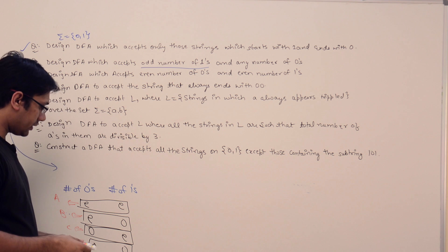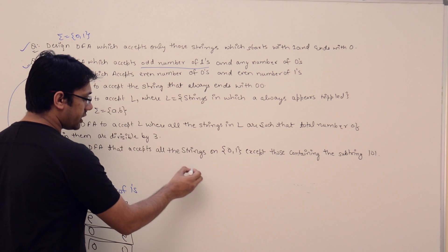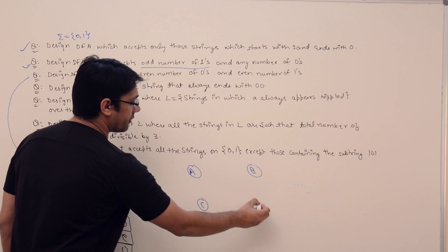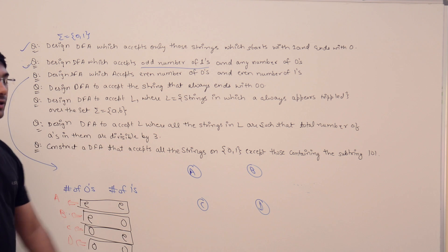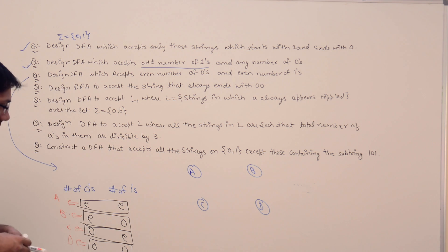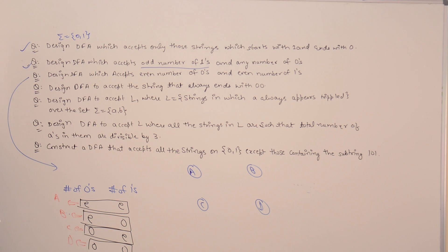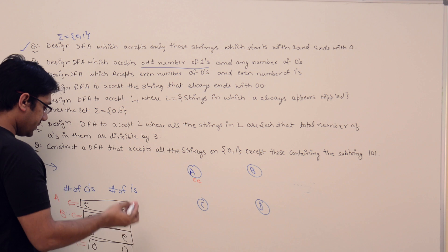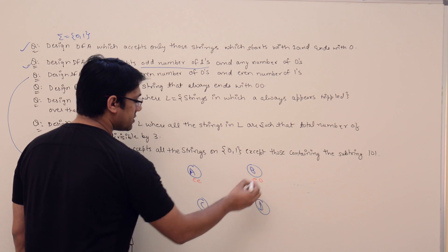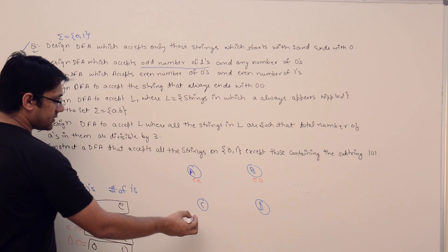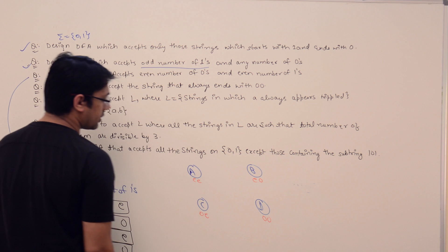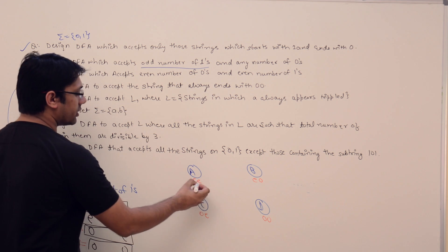So we are going to have four states: A, B, C, and D. State A represents number of zeros and ones both even. State B represents zeros even and ones odd. State C represents zeros odd and ones even. State D represents both zeros and ones odd. The first position is for zeros and the second is for ones.